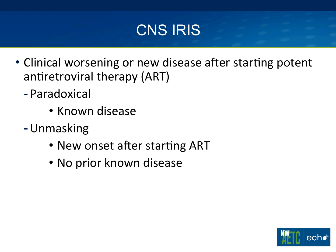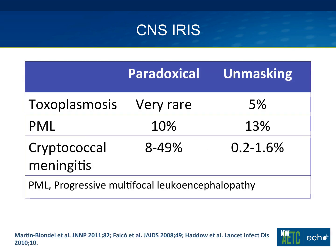In neuro-HIV, we think about CNS-IRIS — defined as clinical worsening or new disease after starting potent antiretroviral therapy. It can be paradoxical, meaning a known CNS infection worsens after starting ARVs, or unmasking, where a neurologic illness presents upon starting ARVs. CNS-IRIS is not a significant problem with toxo, so there's really no reason to delay antiretrovirals in CNS toxo — starting them promptly is beneficial because patients are less likely to become demented.